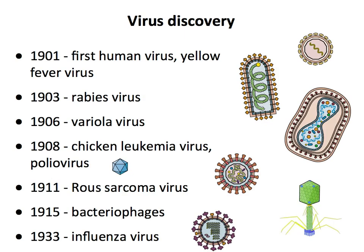Once those discoveries were made, the field exploded. Many other viruses were discovered — the first human virus in 1901, yellow fever. Interestingly, influenza virus was not identified until 1933, which is remarkable because in 1918 there was a massive outbreak of Spanish influenza, and it was not known at the time that the agent was a virus — only much later.